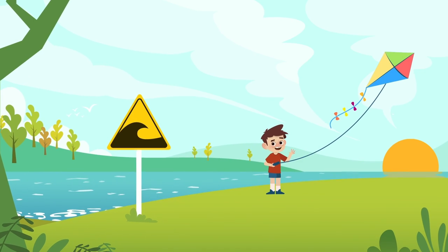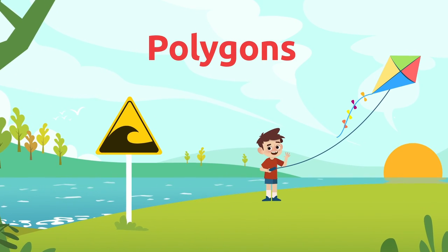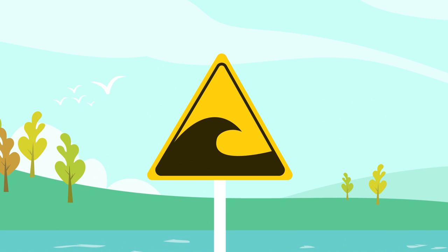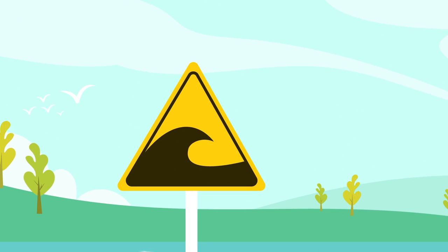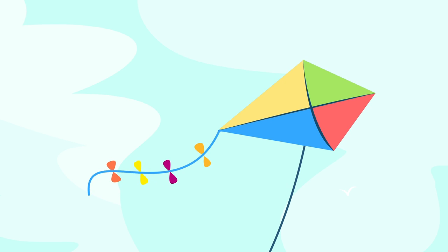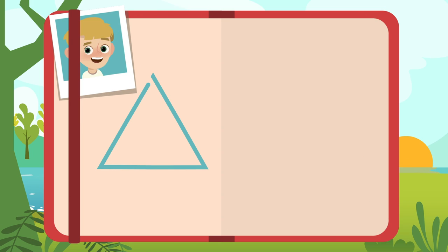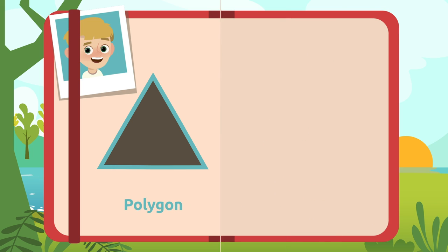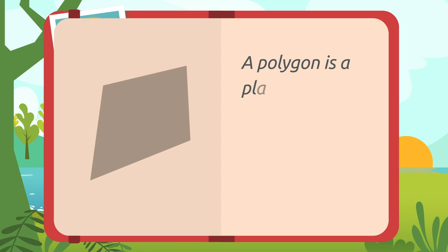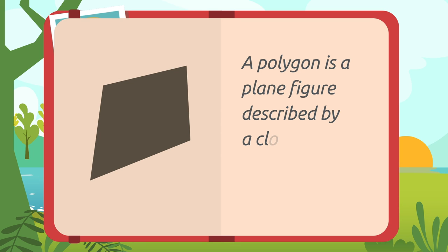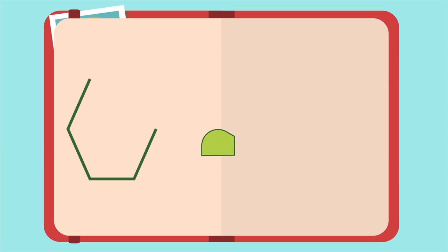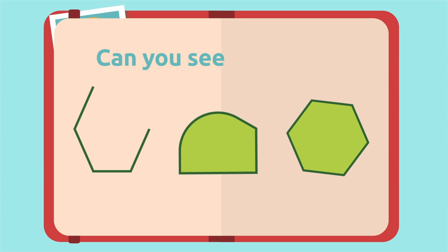Today we're going to talk about polygons — those geometric shapes found everywhere. Can you see that sign over there? Look at that kite! A polygon is a plane figure described by a closed polygonal line.